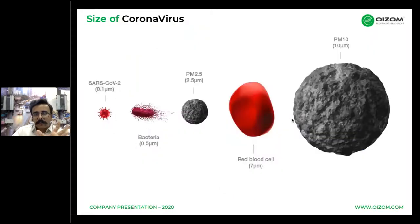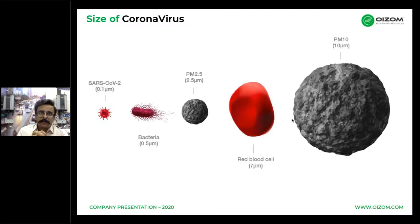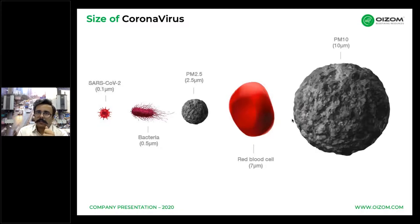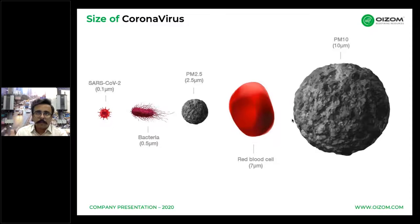To give an idea about the size of the coronavirus and particulate matter: the virus is around 0.1 microns, which is far less than the detection level of particulate matters like PM1, PM2.5, or PM10.